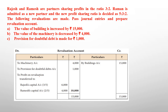Rajesh and Ramesh are the partners, sharing profit in the ratio 3:2. And the following revaluations are made: The value of building is increased by 15,000. The value of machinery is decreased by 4,000 — machinery is also an asset. And the last one: provision for doubtful debts is made for 1,000.